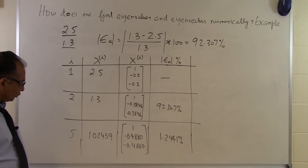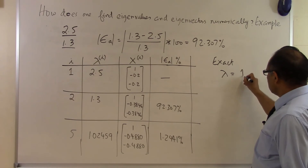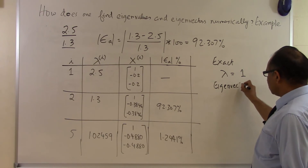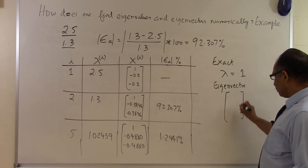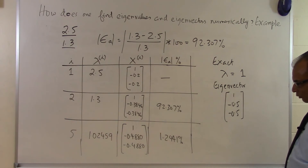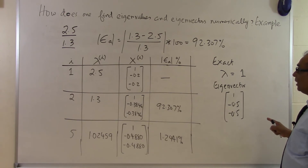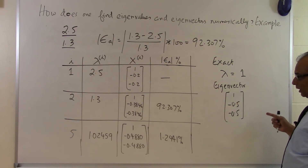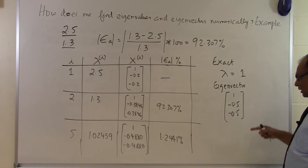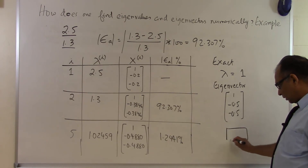If you keep going, the exact largest eigenvalue converges to λ = 1.0, with the eigenvector [1, -0.5, -0.5]. The power method only finds the largest eigenvalue in magnitude. To ensure convergence, one component is kept as unity at every step. The eigenvector is the vector satisfying AX = λX. That concludes this segment.